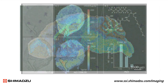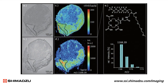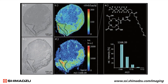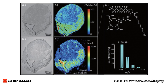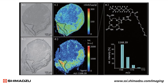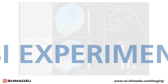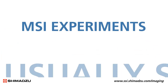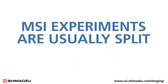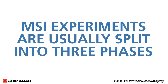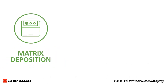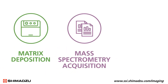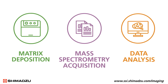The result is a more complete snapshot of the biological specimens that make up the tissue. MSI experiments are usually split into three phases: matrix deposition, mass spectrometry acquisition, and data analysis.